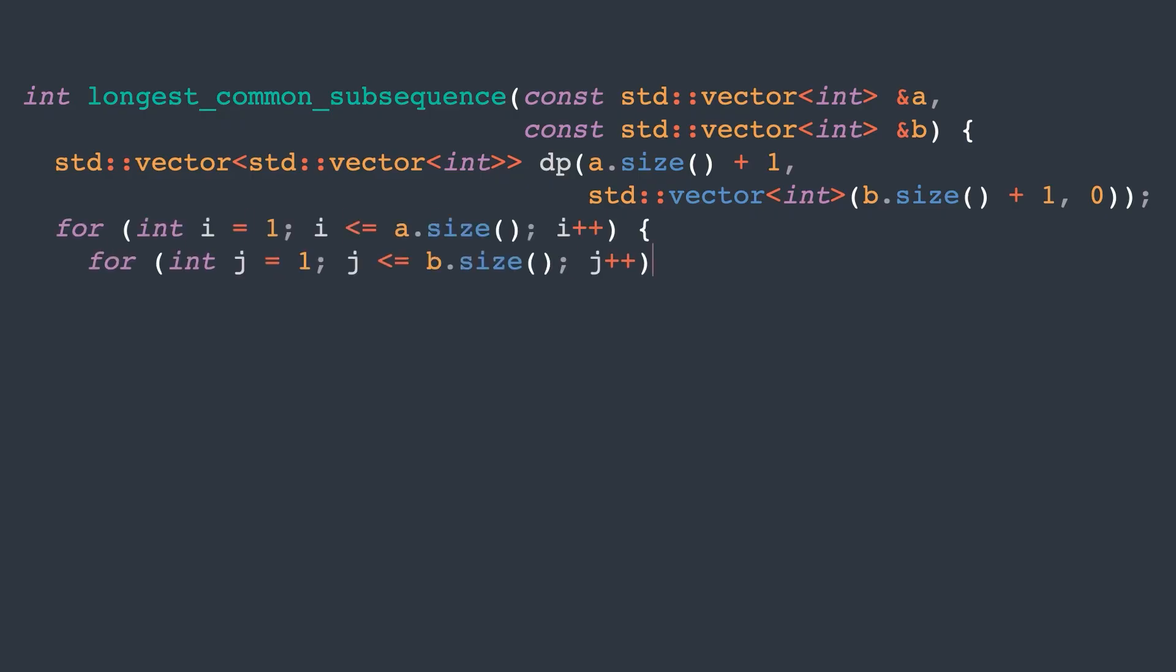We then iterate over smaller sub-problems first. Remember the lesson from the first video. It's important to solve sub-problems in topological ordering. If the last elements are the same, we can take them. Otherwise, we take the better solution after skipping one or the other. Finally, we can return the length of the longest common subsequence.